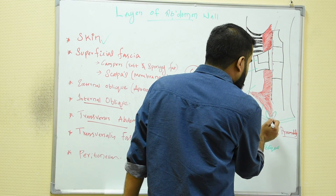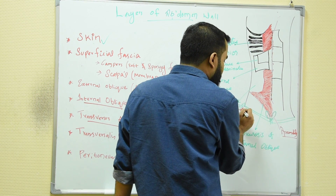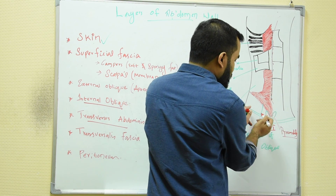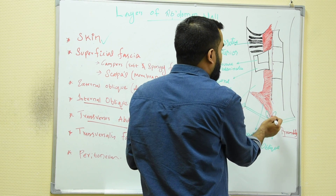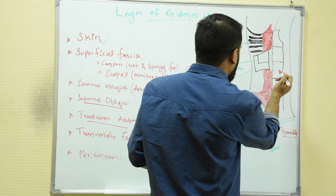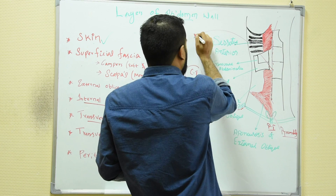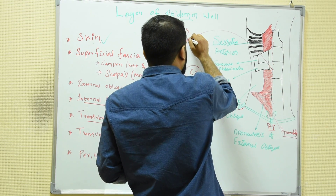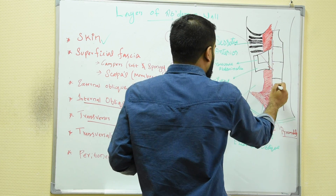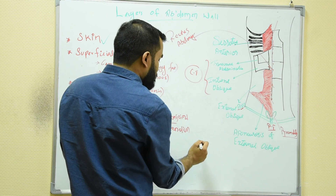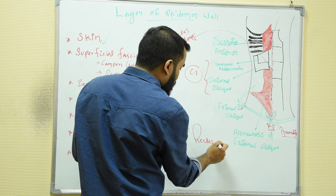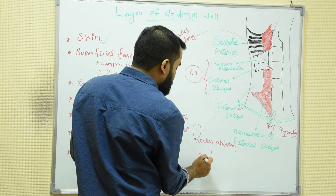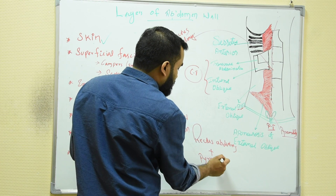We have a muscle here called pyramidalis. You can see the anterior superior iliac spine and the pubic tubercle — that is our inguinal ligament. And we have the pyramidalis muscle and the rectus abdominis muscle marked here.